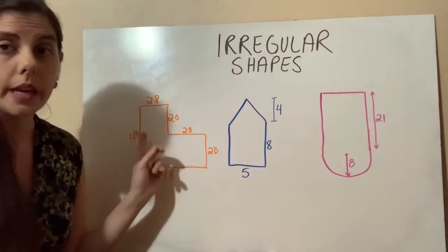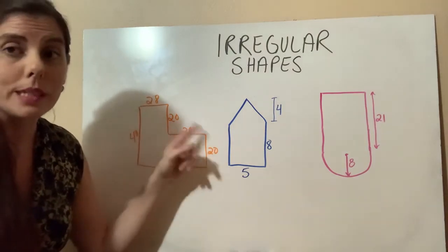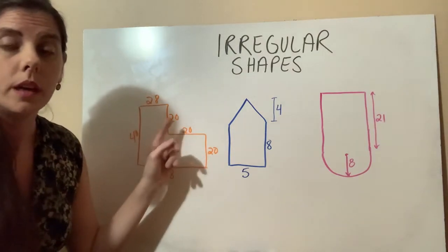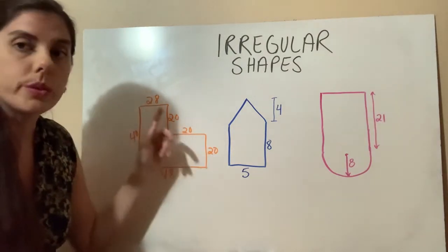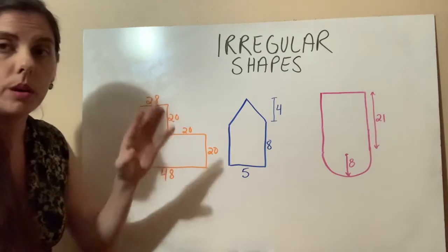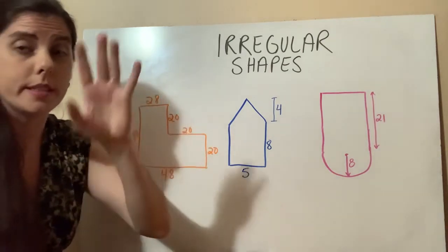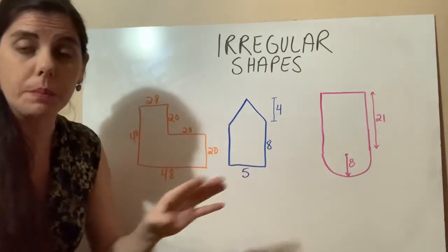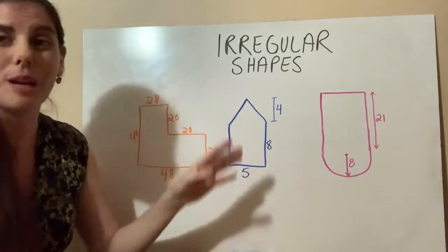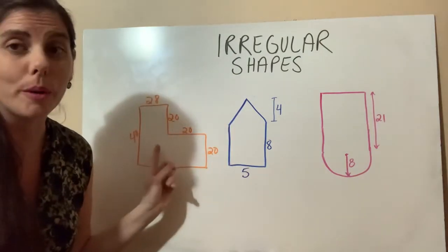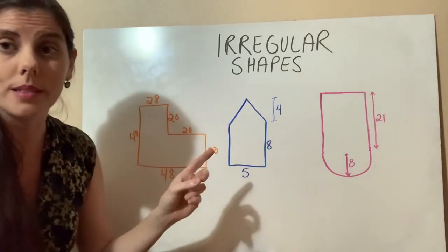To get the perimeter, you need to find those missing lengths and then just add all those sides up — all six sides. So if it's a six-sided shape, a seven-sided shape, or an eight-sided shape, when you're getting a perimeter, you just add all those sides.